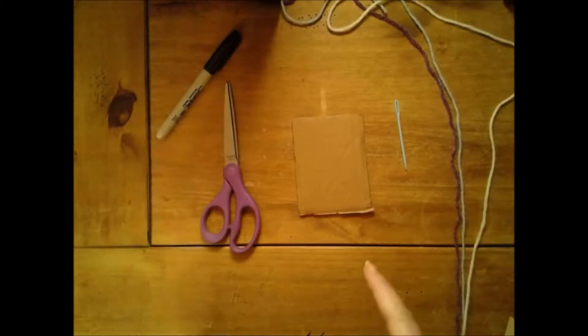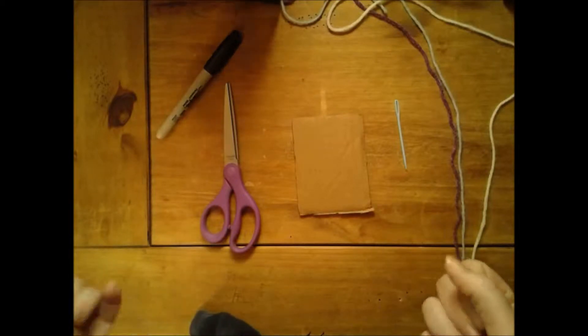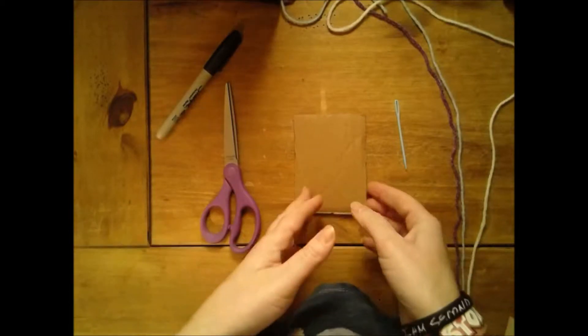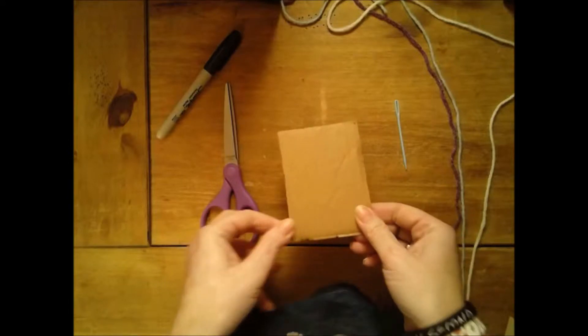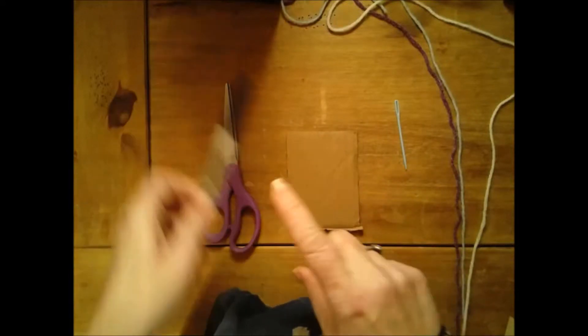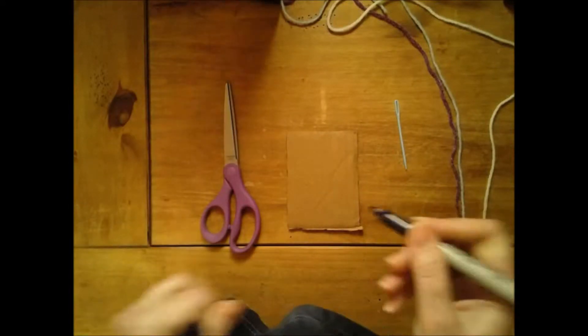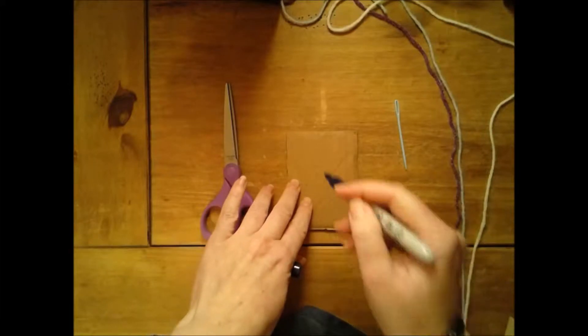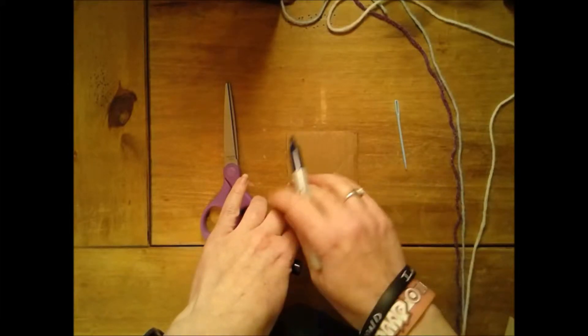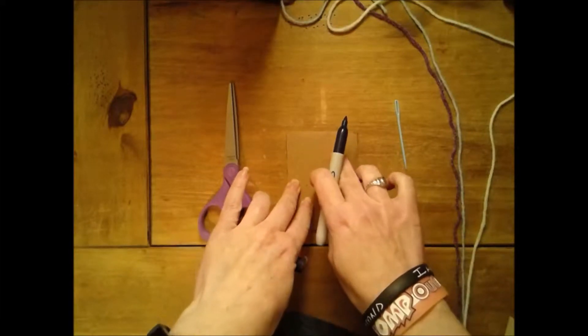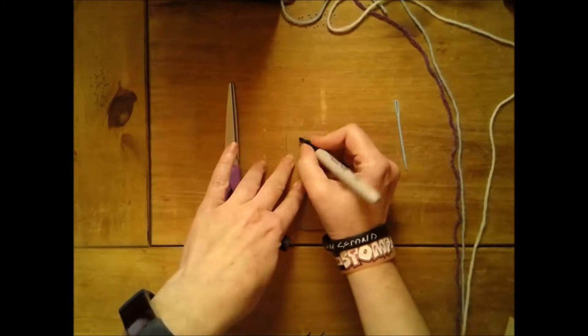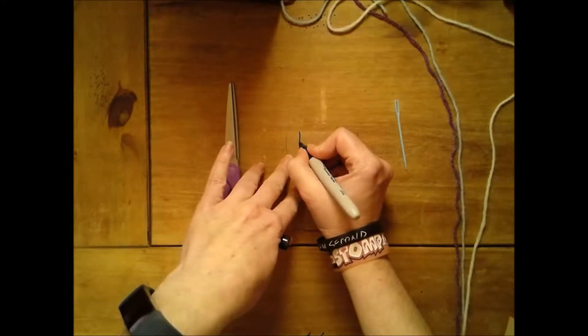All right, so today I'm going to show you how to make a weaving on a cardboard loom. You're going to start with a rectangle piece of cardboard first, and the first thing you're going to have to do is make some marks that are evenly spaced across the top.